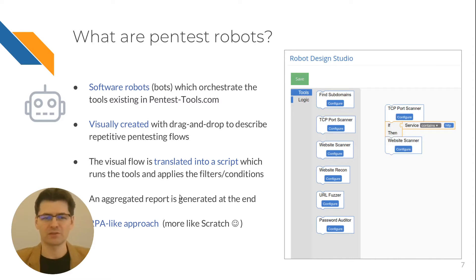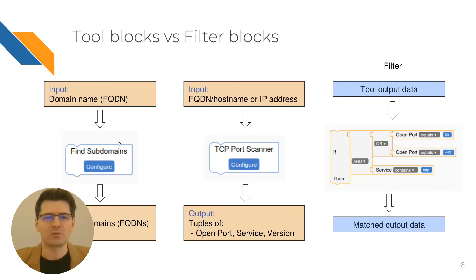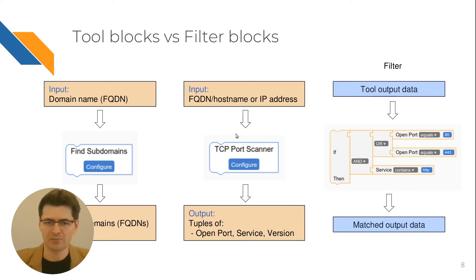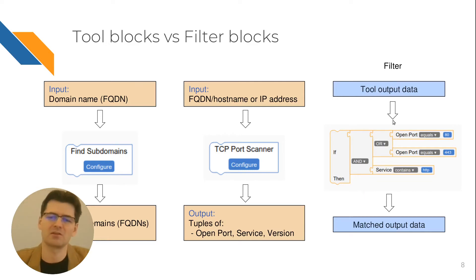At the end an aggregated report is produced and you can see that this is much like RPA — robotic process automation — but we did not use any external RPA solution. This is an in-house built solution to design these testing flows. The robots work with two types of blocks: tool blocks and filter blocks. The tool blocks get some input and produce some output — for instance, Find Subdomains gets a domain name as input and produces a list of subdomains. The TCP Port Scanner gets an IP address or hostname as input and produces a tuple of open ports and services. And there is the filter block which gets some data and applies conditions — you can filter on open port, service, technology and so on — and produces a set of data which matches the filter.